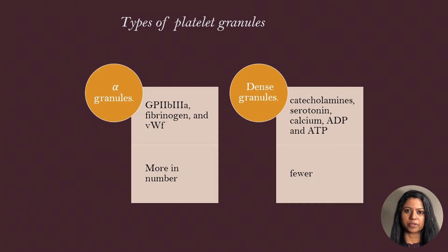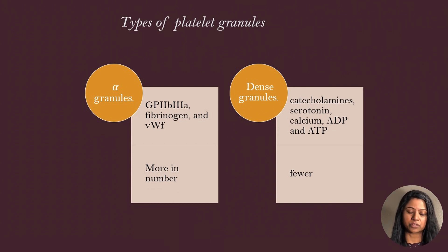Let's begin with a few important concepts regarding platelets. Platelets are formed from megakaryocytes and they have a lifespan of around 8 to 10 days. Platelets have two important storage granules: alpha granules and dense granules. Alpha granules are more numerous and they store fibrinogen, von Willebrand factor, and glycoprotein 2b3a.